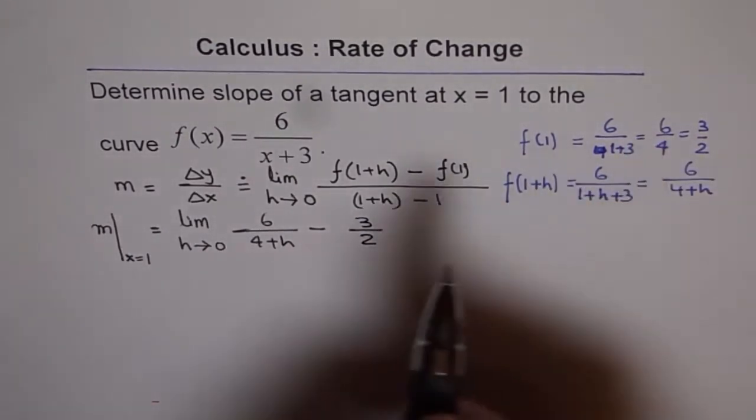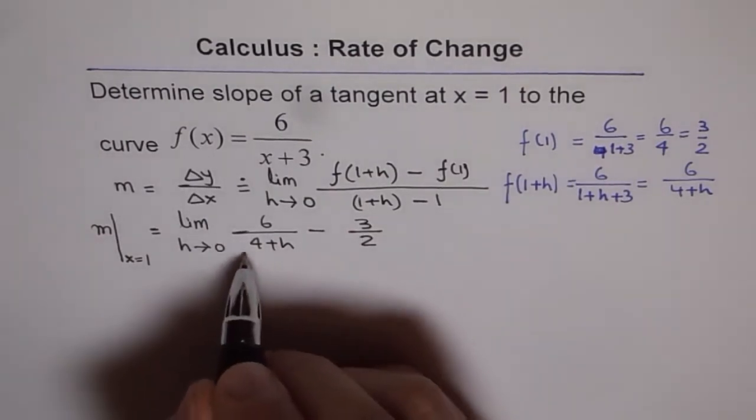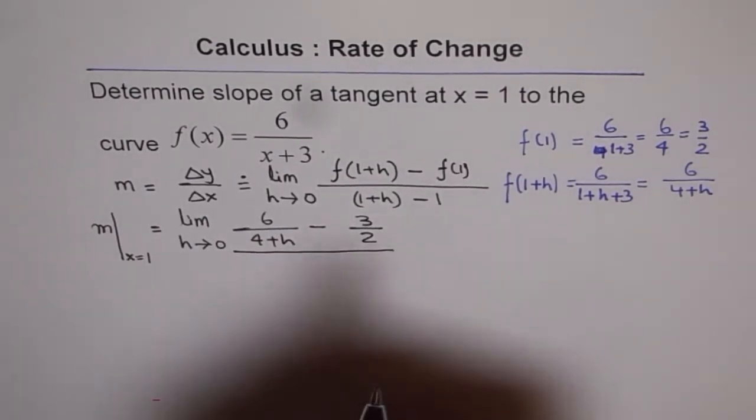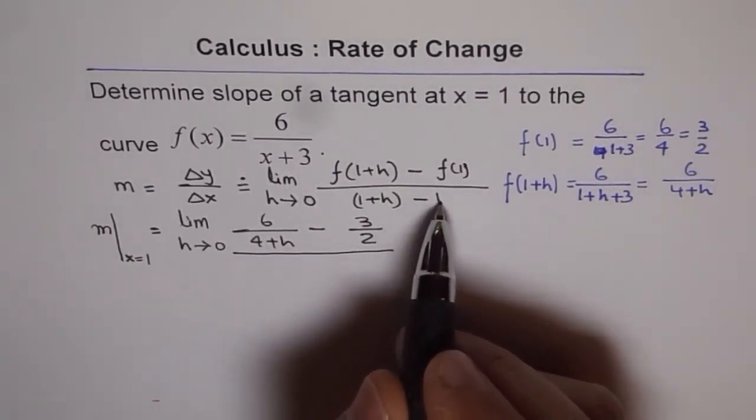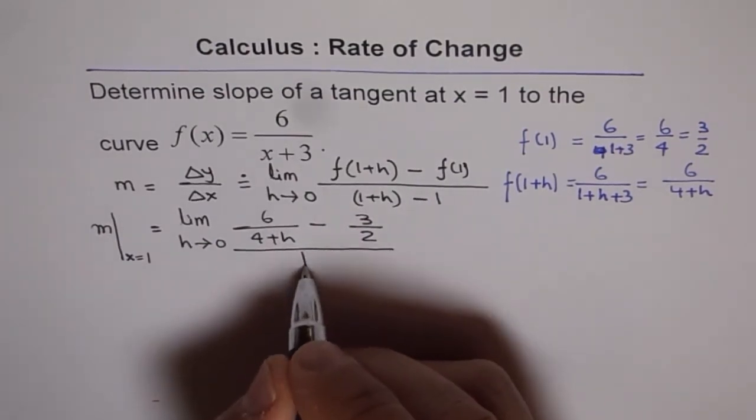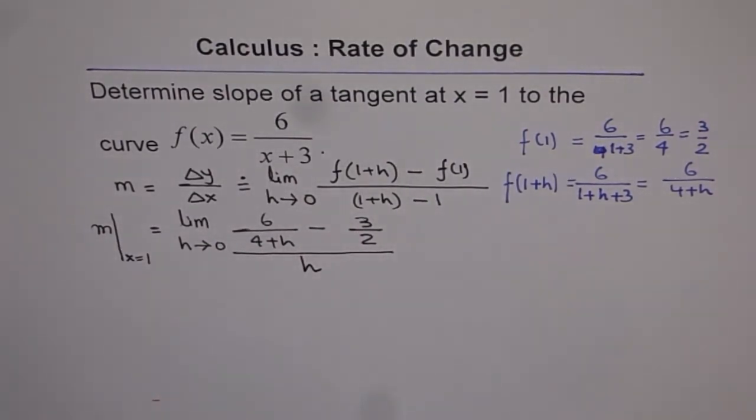So, the simplified value we are taking, we could have written 6/4 also. Now, this is better. Divided by 1+h minus 1 is h. So, let me write this h, correct? So, that is how we can get the answer.